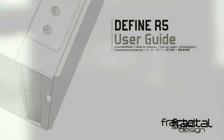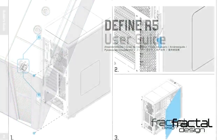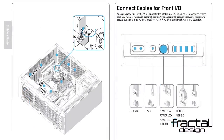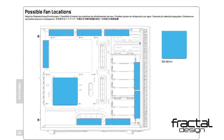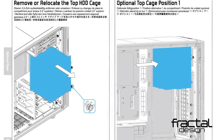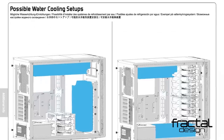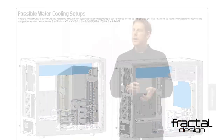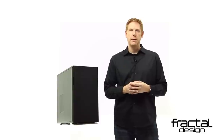No detail has been overlooked in the creation of the Define R5. The instruction manual is designed to be truly helpful, with thorough explanations and illustrations that can guide someone through their first build, while also explaining all of the optional features clearly in a way that is a benefit to even advanced builders. We created the Define R5 for you. We listen to your feedback, and we strive to make improvements in every aspect. Thank you for helping us create the Define R5.